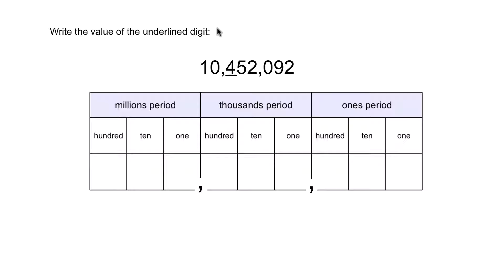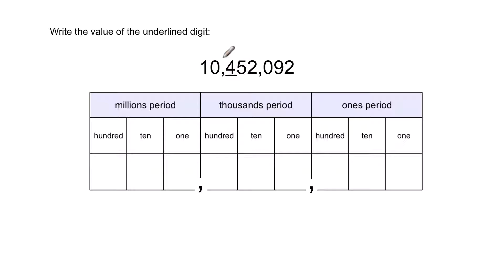Here is the first type of problem you're going to see: you're going to have to write the value of an underlined digit. The four in this number is underlined, and we want to know the value of that digit only. The value is made up of the digit plus the place it's in. To figure out exactly what place it's in, let's put this number on the place value chart. On the place value chart, you can see there are periods: the ones period, the thousands period, and the millions period, each separated by a comma.